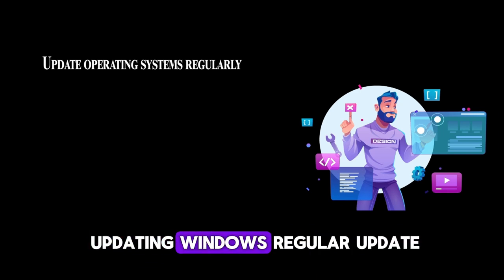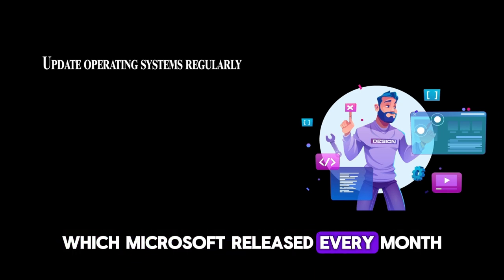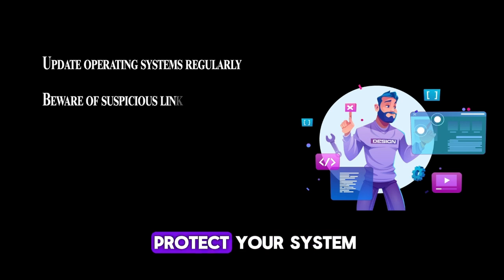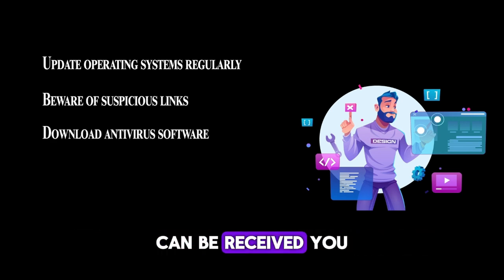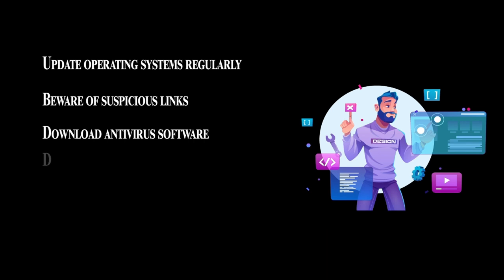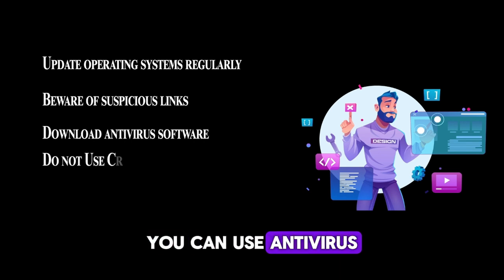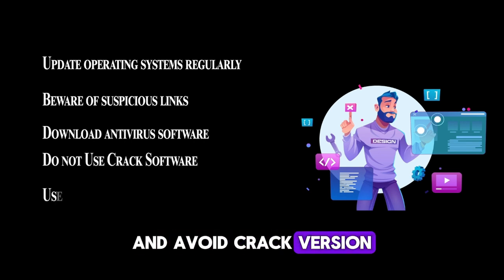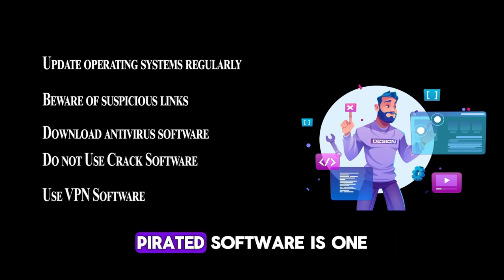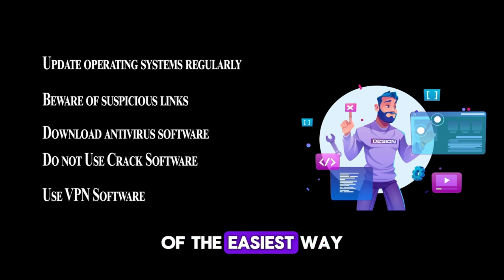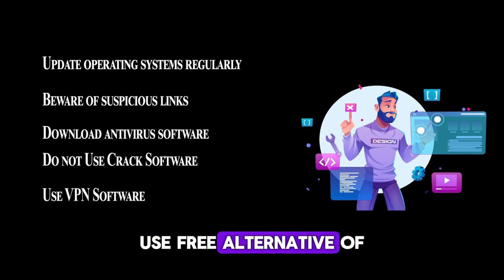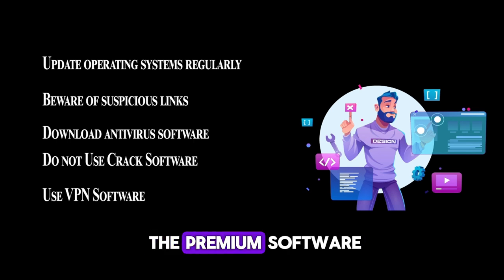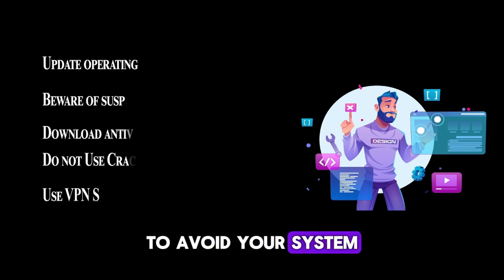You can stop malware by regularly updating Windows with the updates Microsoft releases every month. The second way to protect your system is to be aware of suspicious links, which can reach you in many ways. You can also use antivirus software and avoid cracked or pirated versions of software, as pirated software is one of the easiest ways to spread malware. Use free alternatives to premium software to avoid getting hacked.